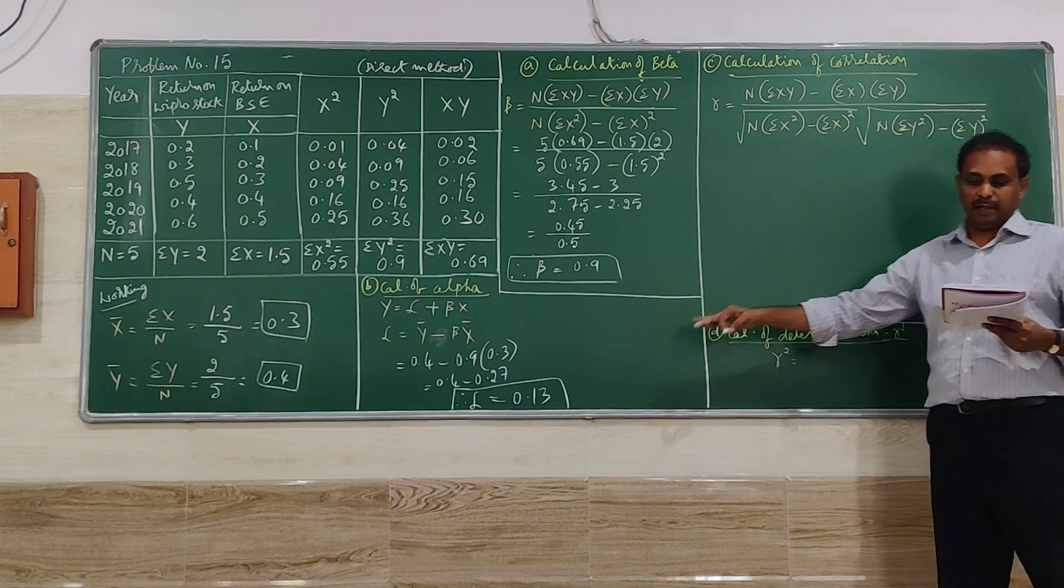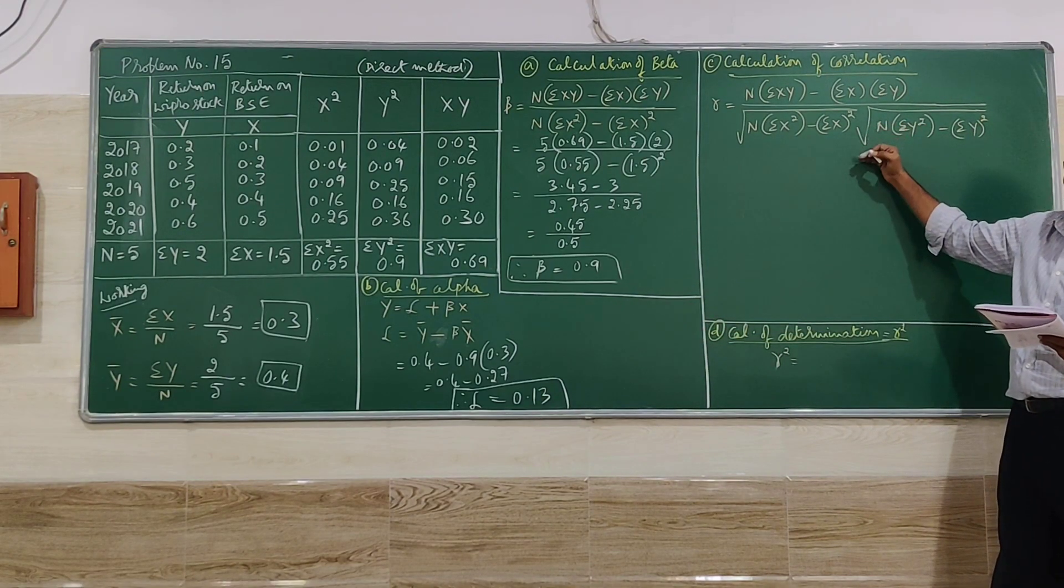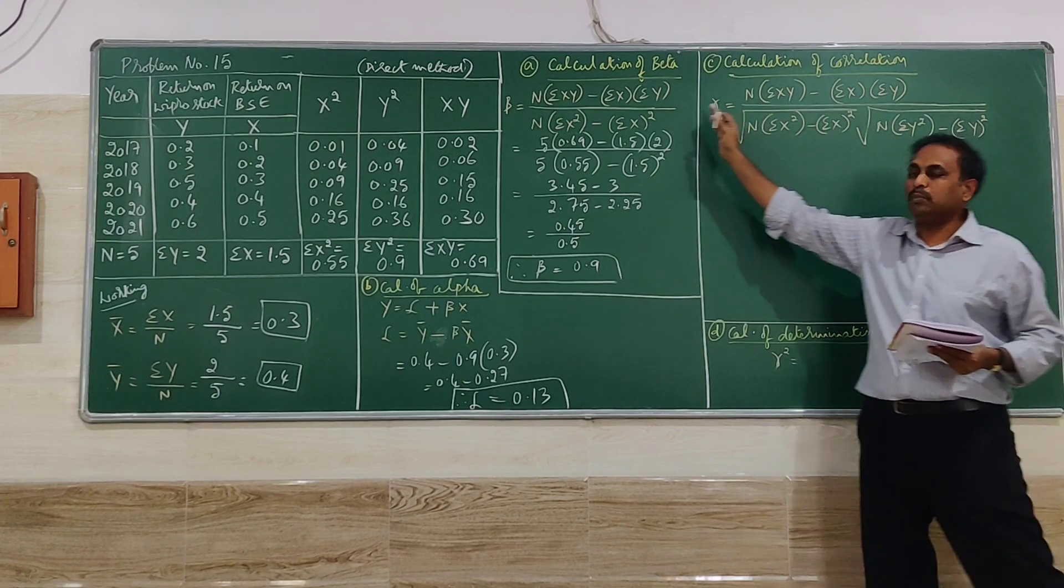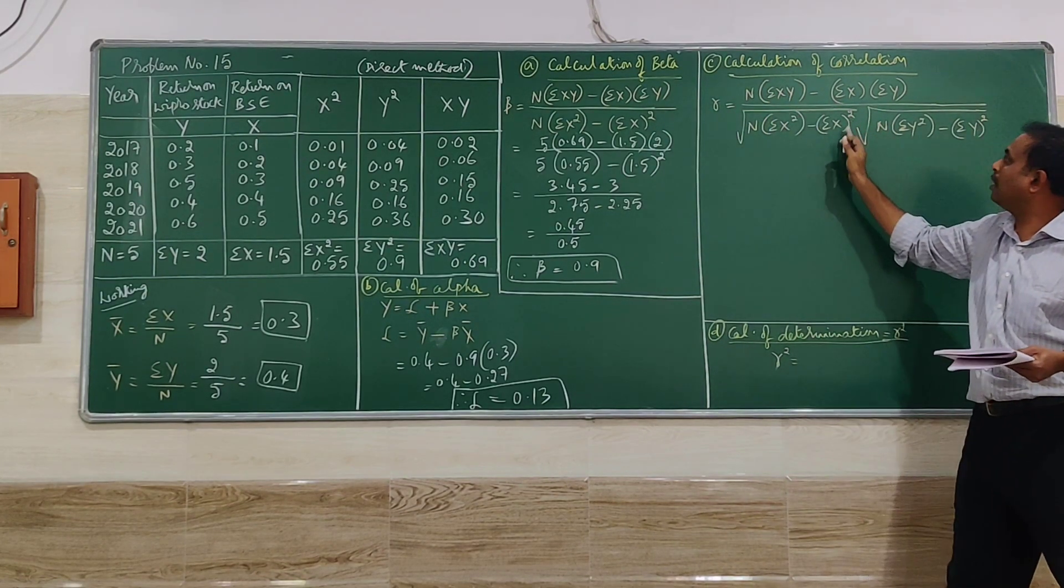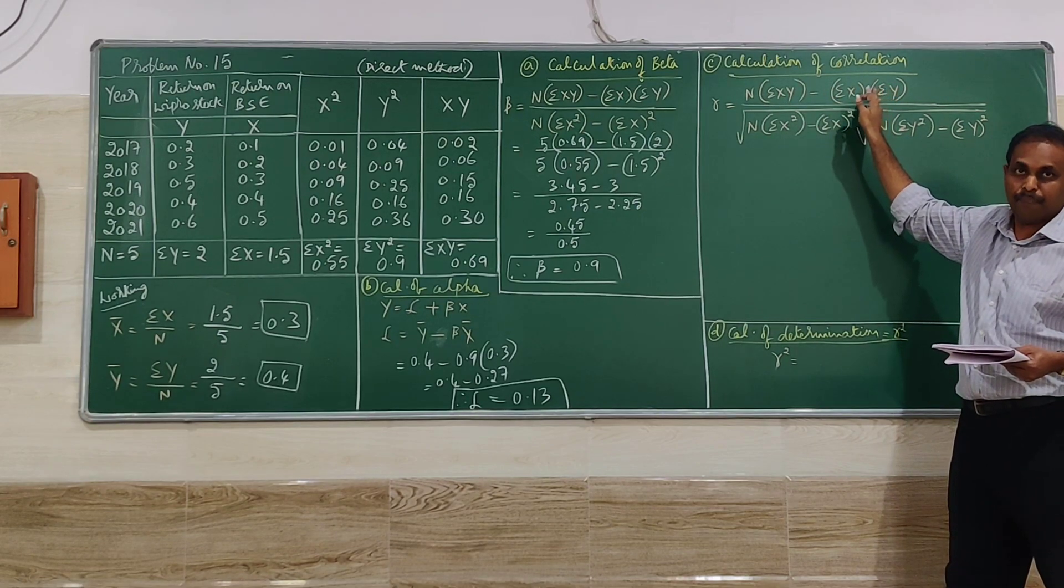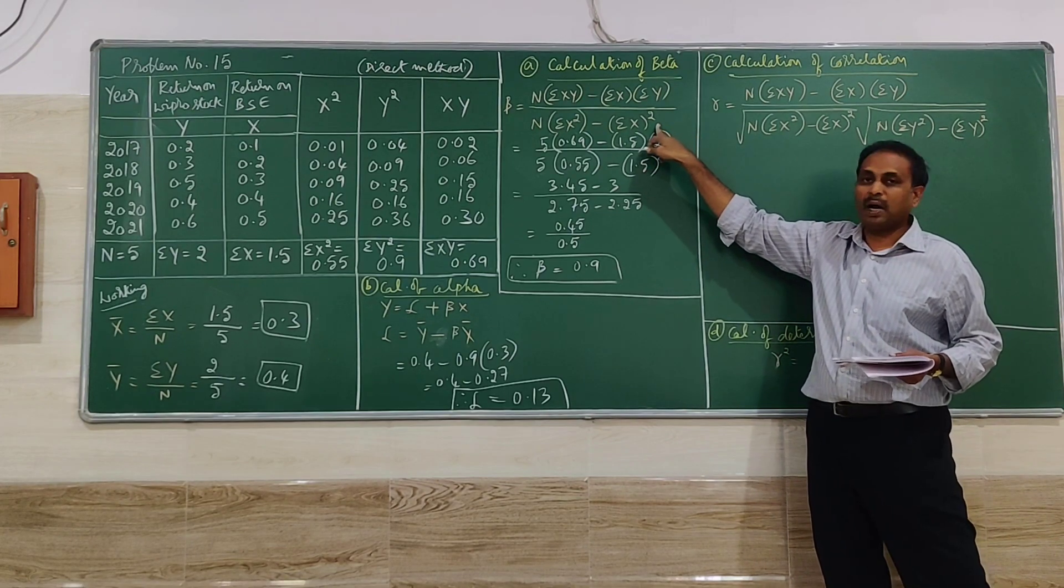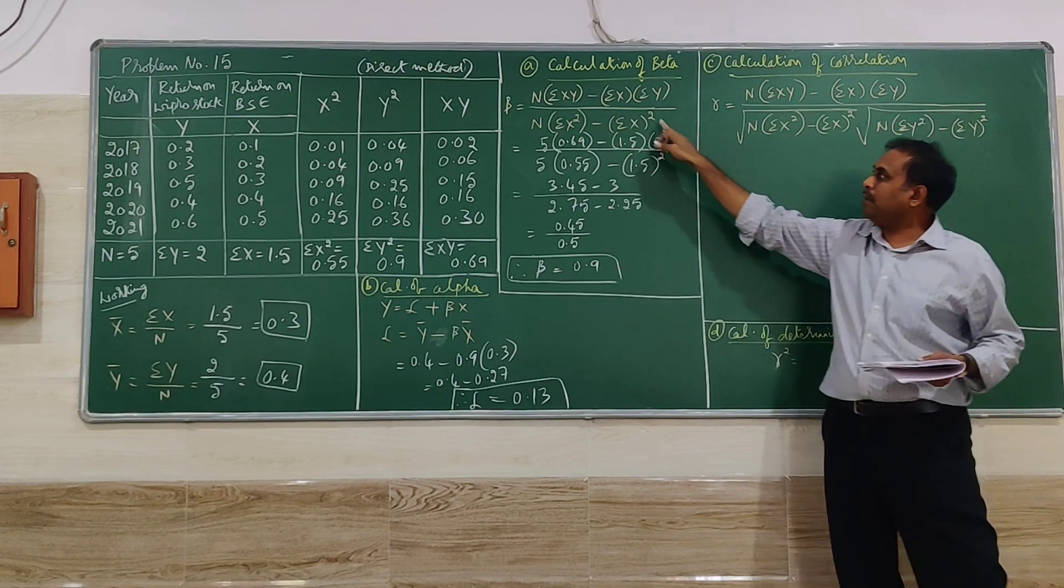So after calculating the alpha and beta, we are moving on to the correlation. In the correlation, you can observe the formula of beta and formula of correlation. The numerator is same. Denominator has changed little bit. The first part of it is same.